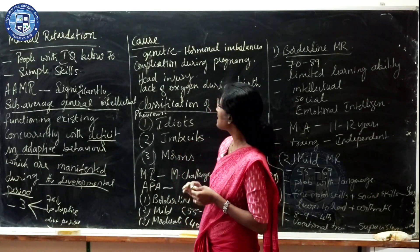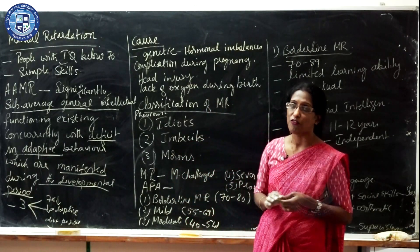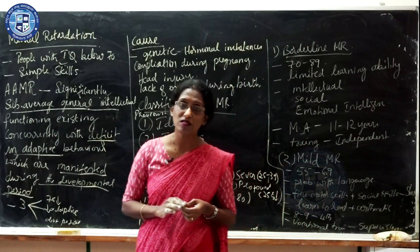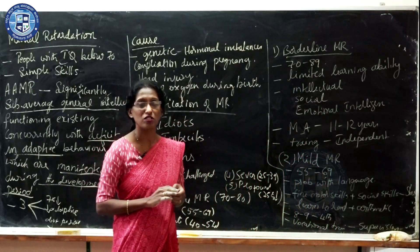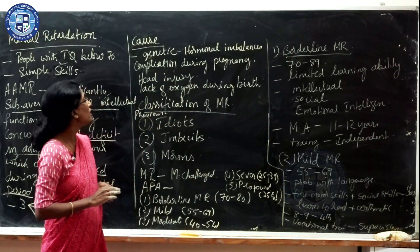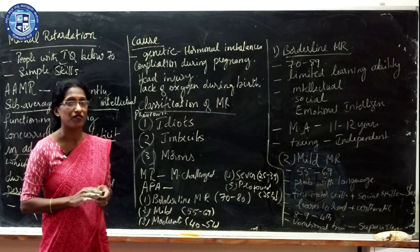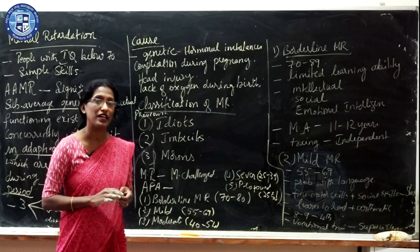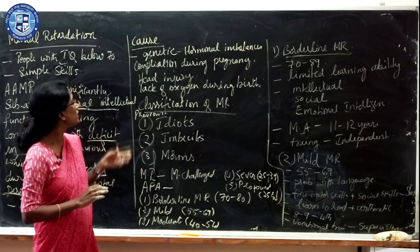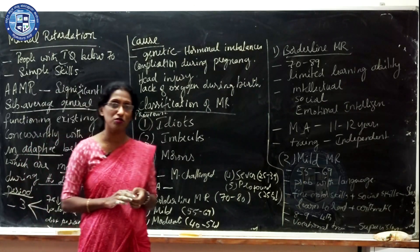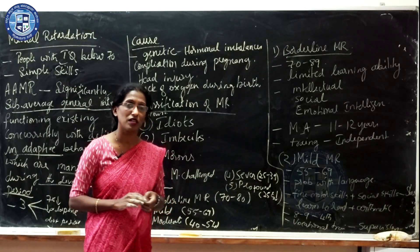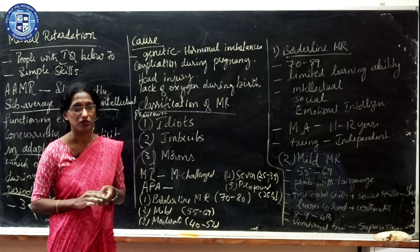Now let us see what are the causes of mental retardation. The cause is not always clear. Studies show it may be due to genetic factors like hormonal imbalances. Other reasons may include complications during pregnancy, lack of oxygen during birth, and head injury.